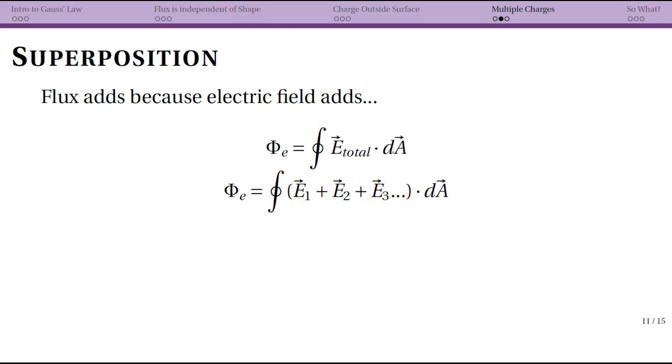We have a bunch of different electric fields from our bunch of different point charges. Once you have a bunch of added terms inside an integral, you can break each one out into an integral. This is just a calculus property: the integral of A plus B is just the integral of A plus the integral of B.